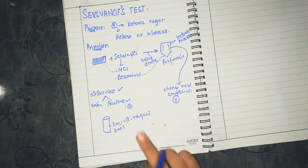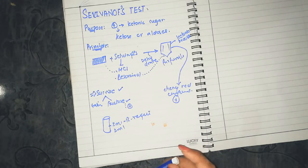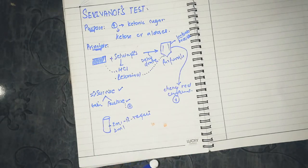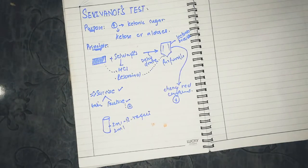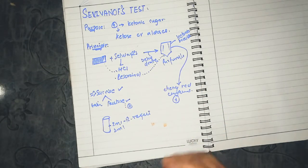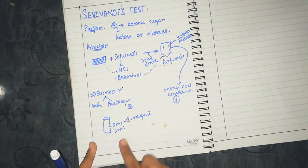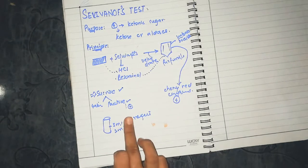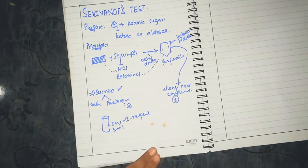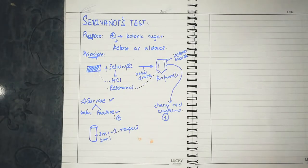You should boil for a longer time to convert the sugar into keto form so you can better interpret the color compound. Boil for 30 seconds. With 3 ml of Selivanov's reagent and 1 ml of sample, a cherry red compound indicates a positive test, meaning ketonic bodies are present.